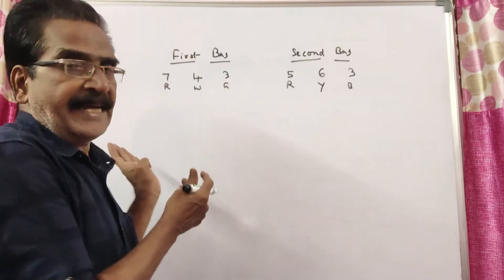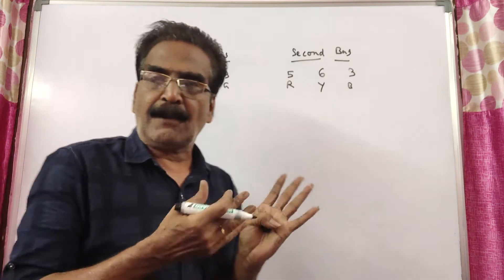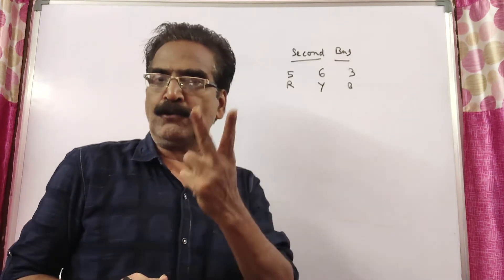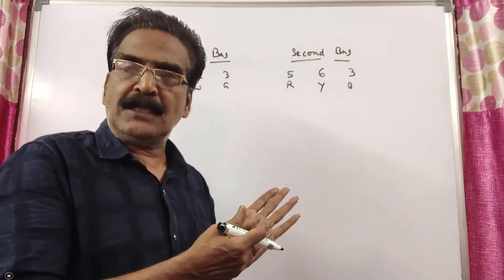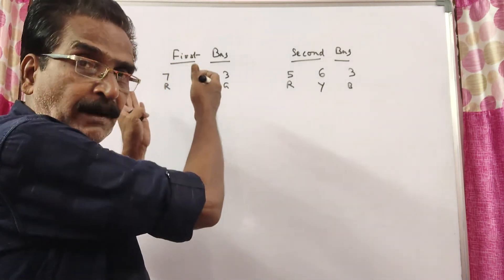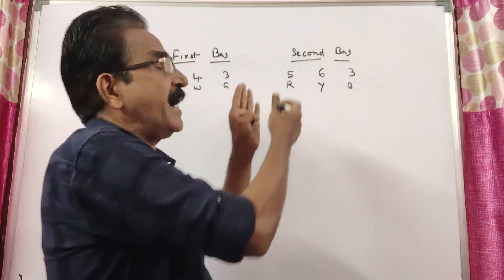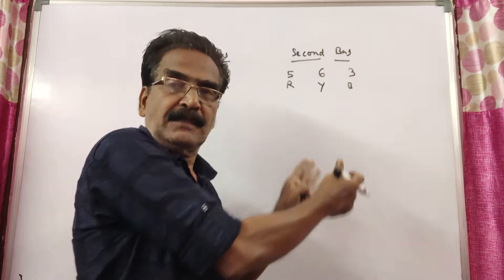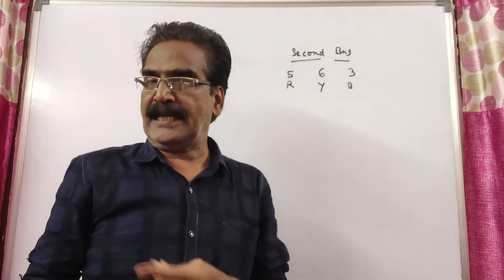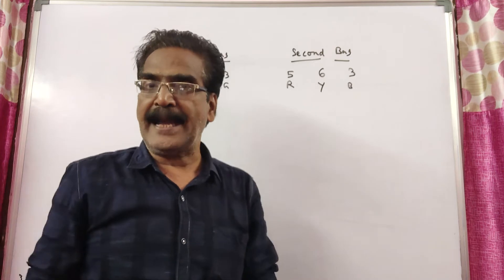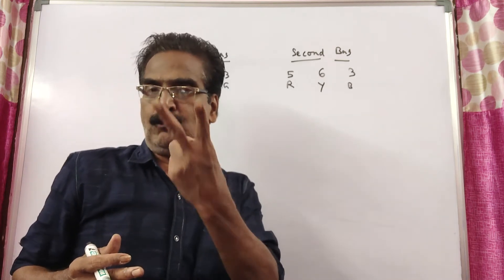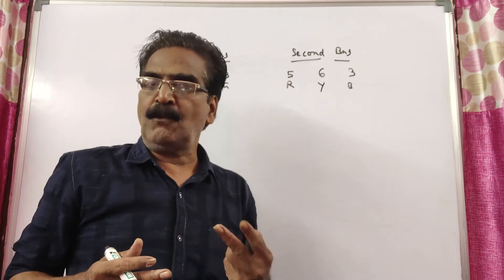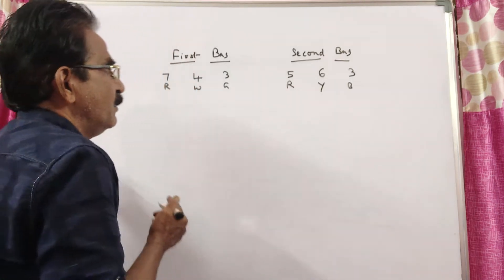Friends, here we have to add the probabilities - we have 2 bags. We have to add the probabilities of drawing a red ball from this bag and drawing a red ball from this bag. Before that, we have to select the bag. So, we have 2 bags. What is the probability of selecting the bag?